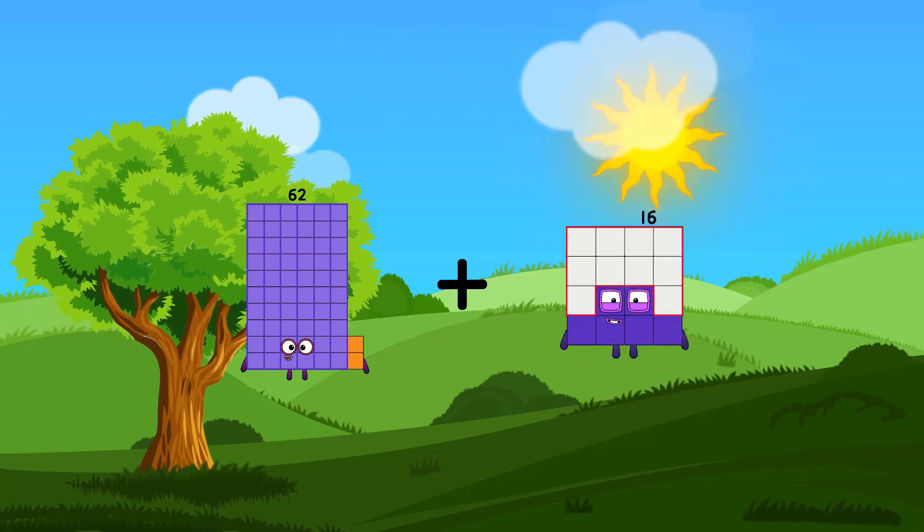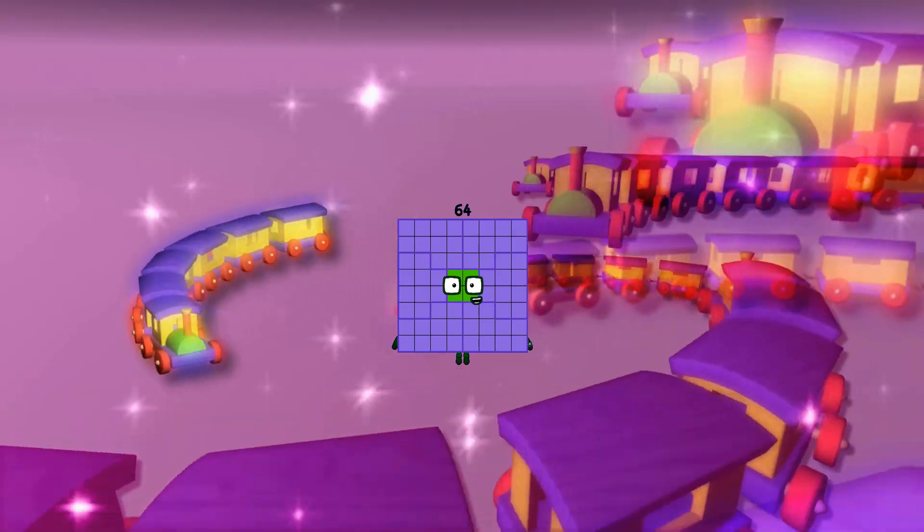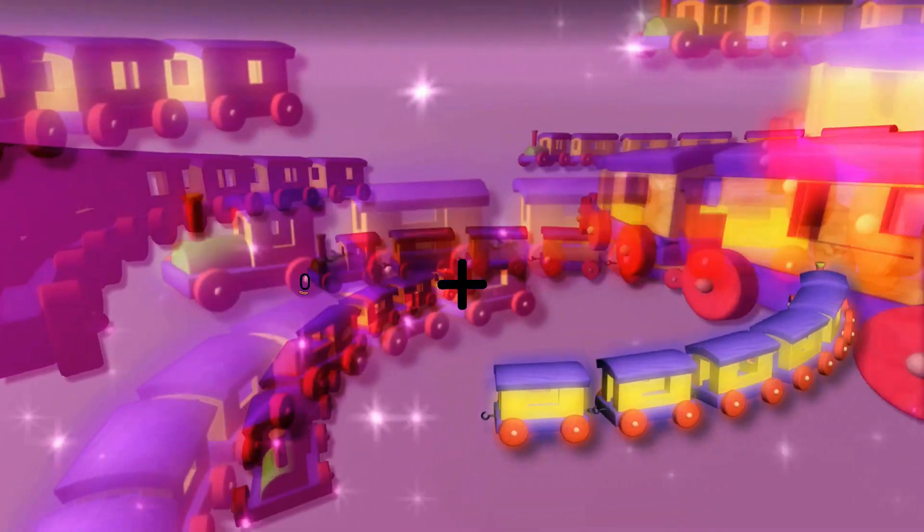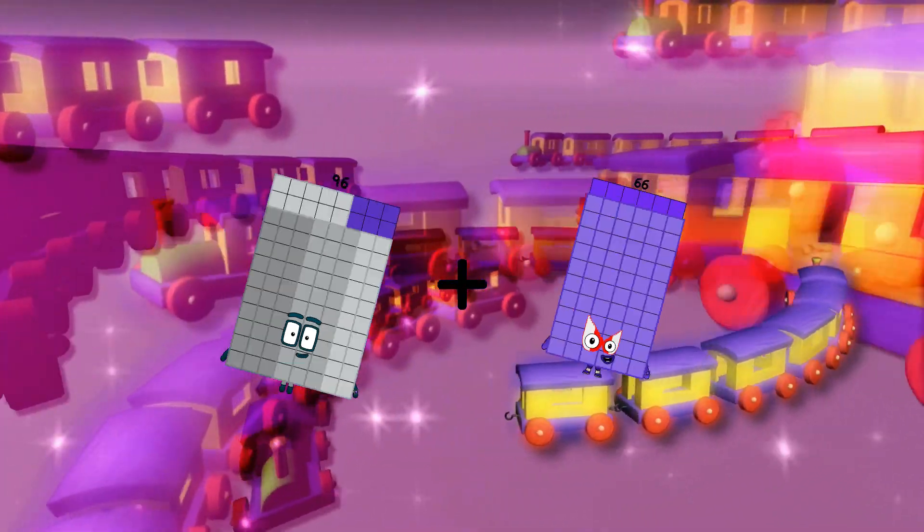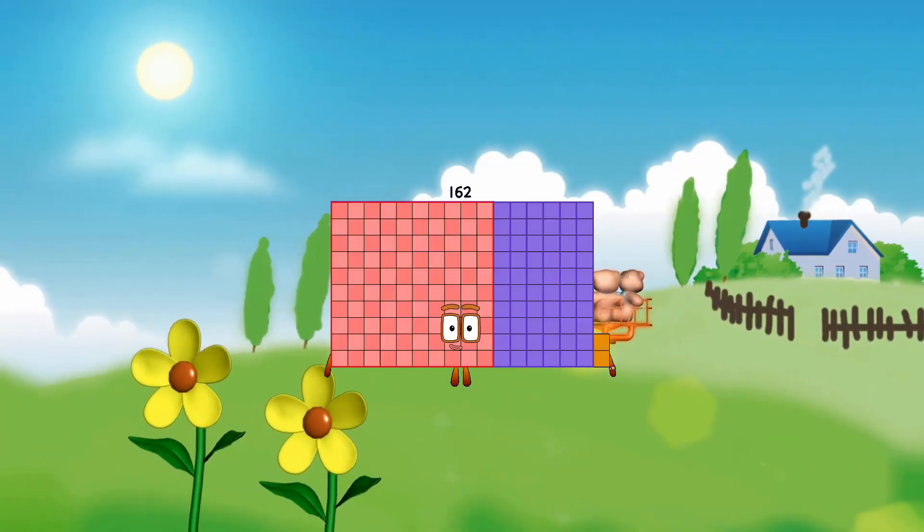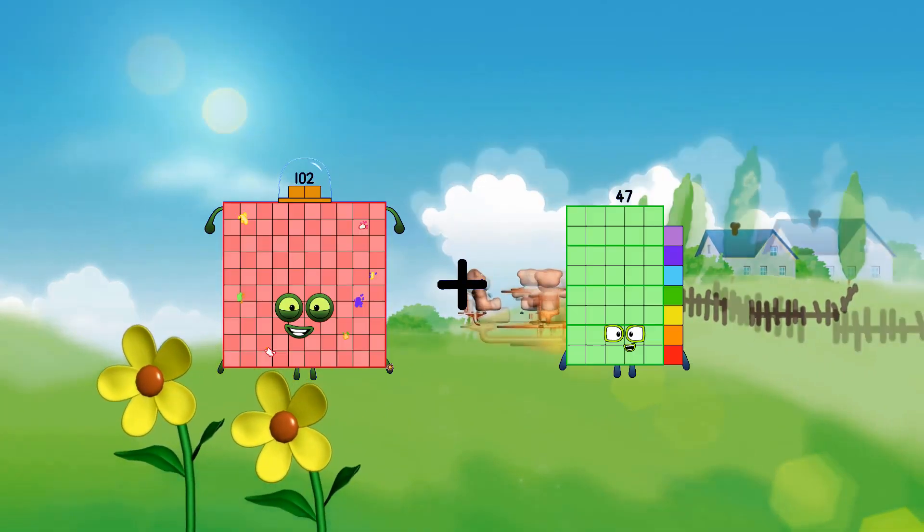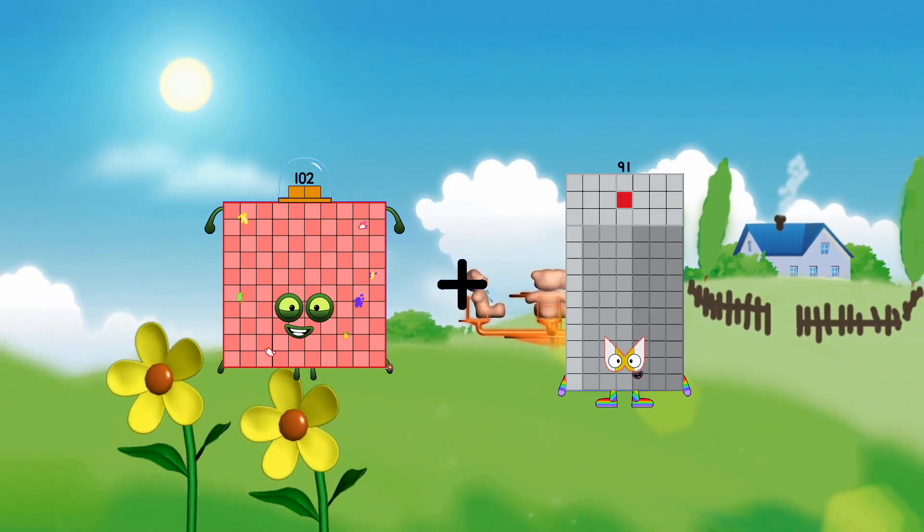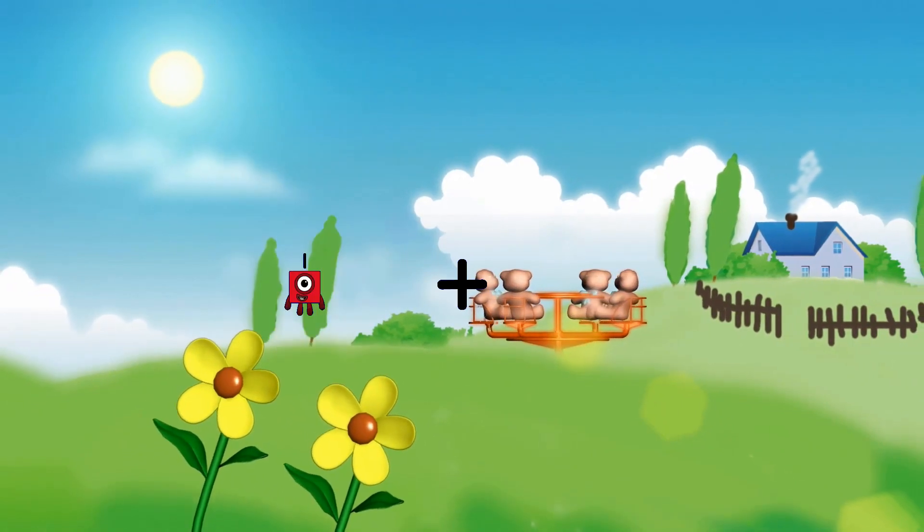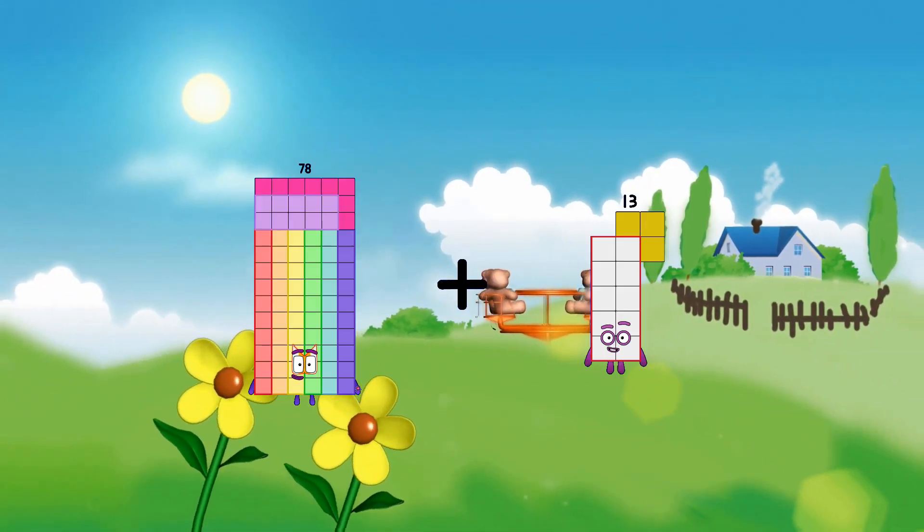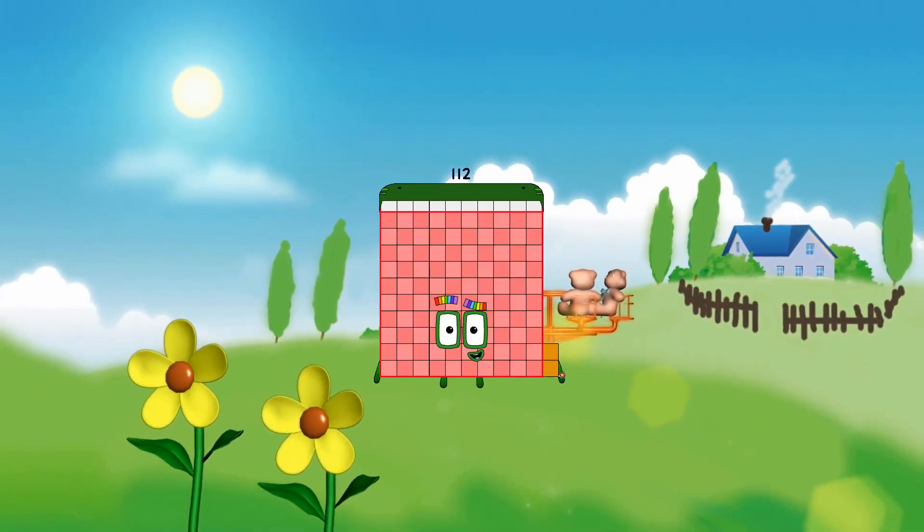62 plus 2 equals 64. 94 plus 68 equals 162. 102 plus 91 equals 193. 78 plus 34 equals 112.